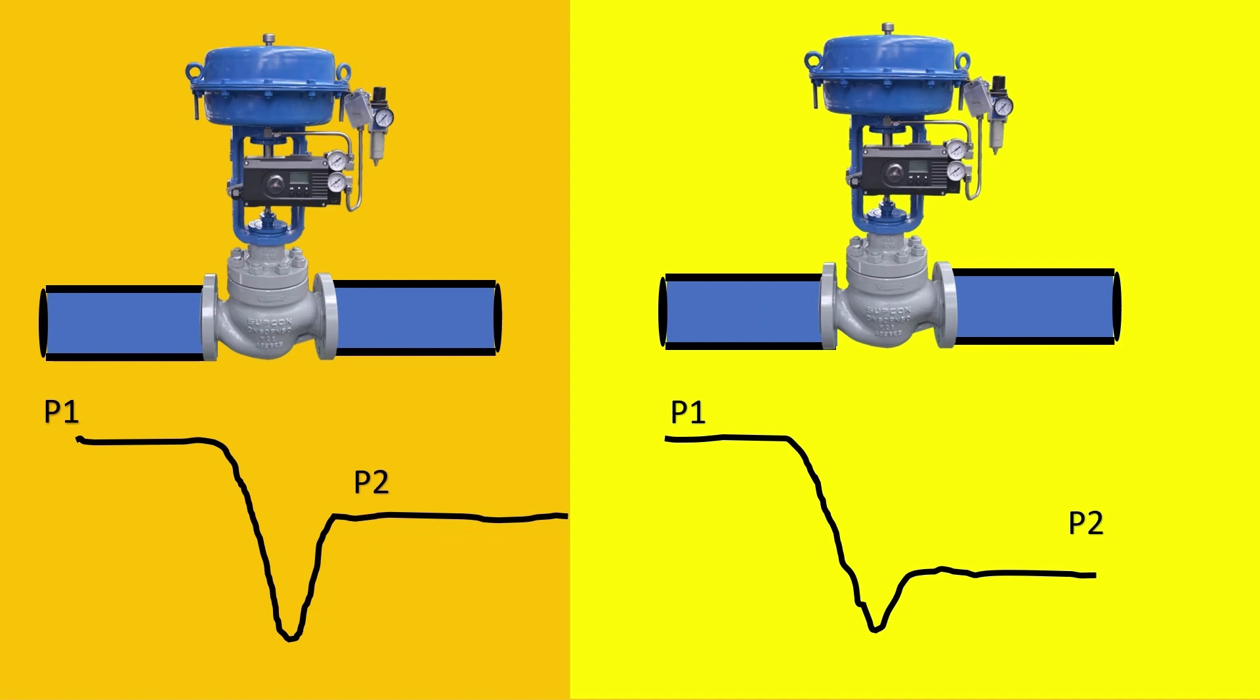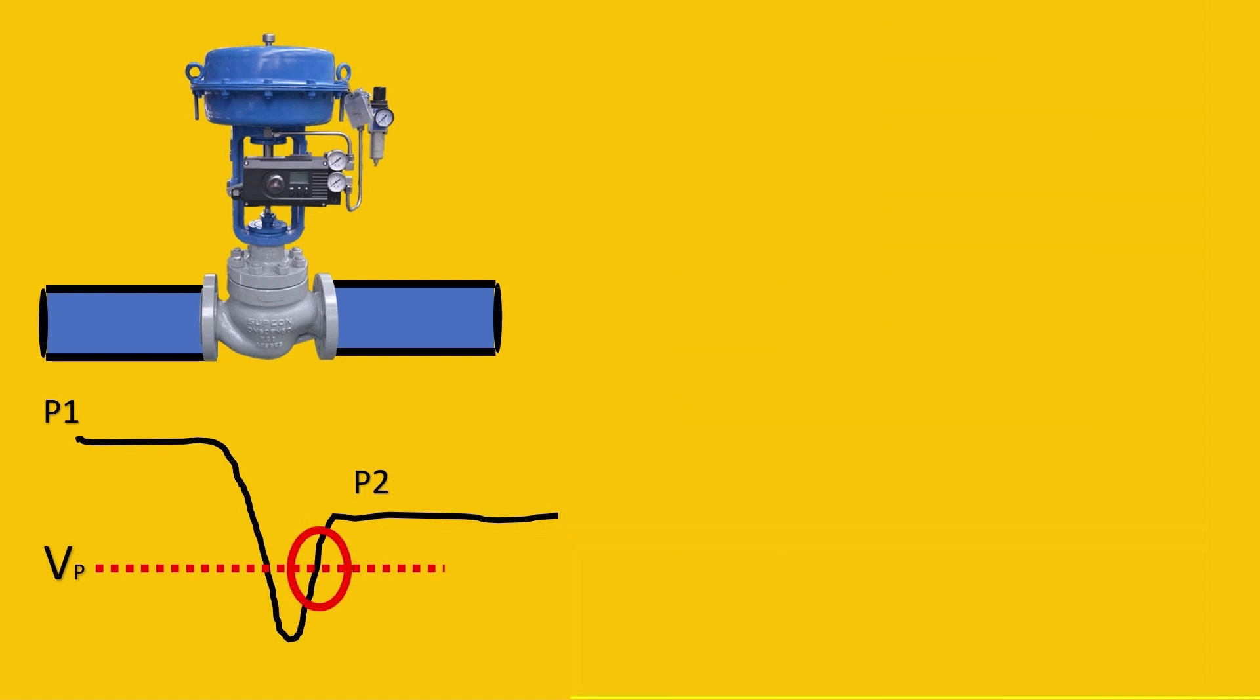Both of them - what you do is you just change the downstream pressure. The P1 remains the same. What happens here is when both have the same vapor pressure curve and the same pressure drop happening to them, but the downstream pressure here is significantly reduced. But why do we do that?